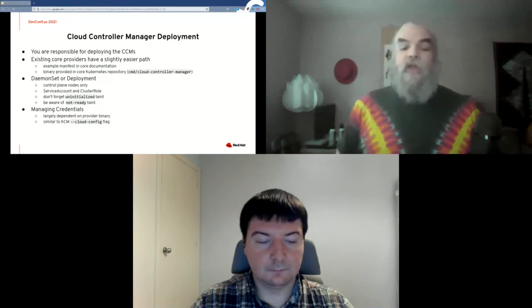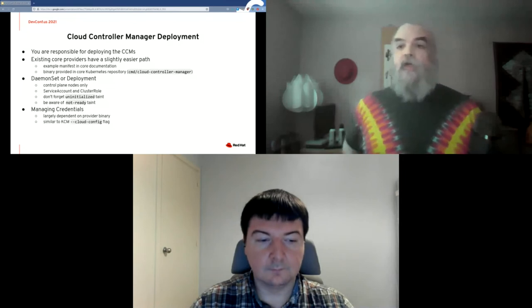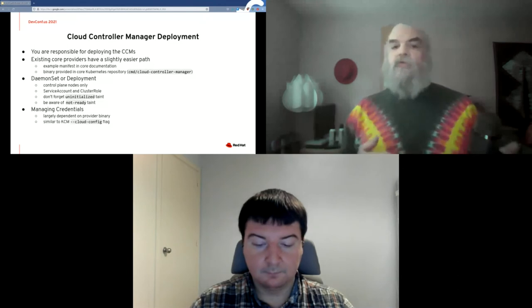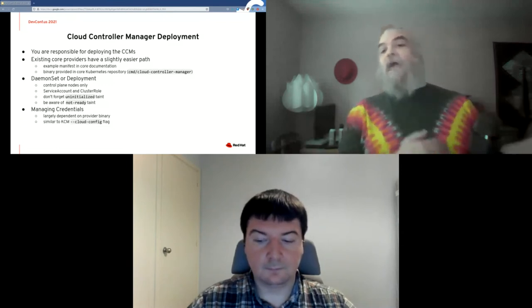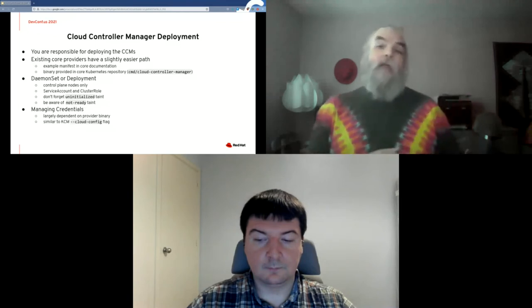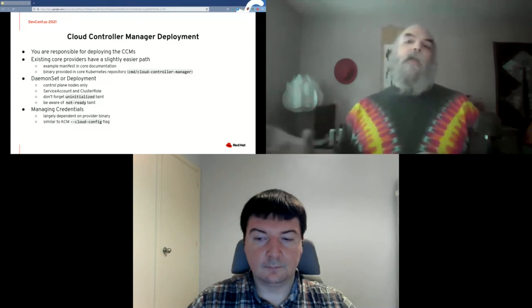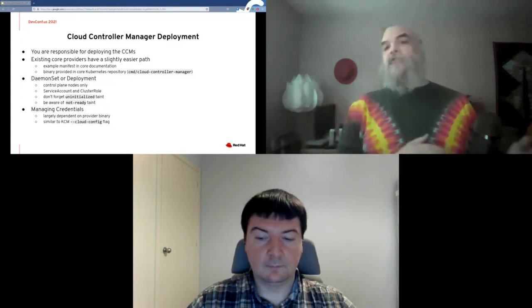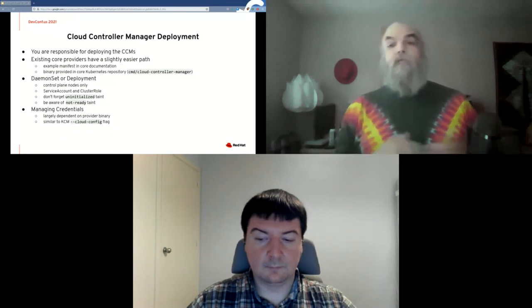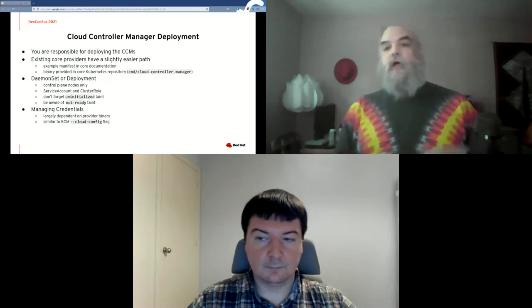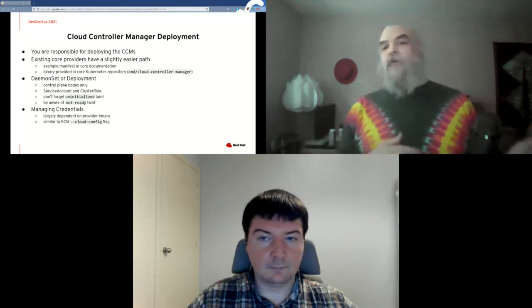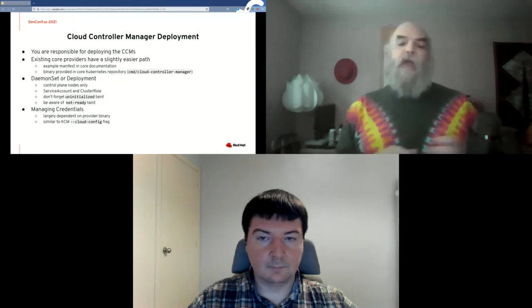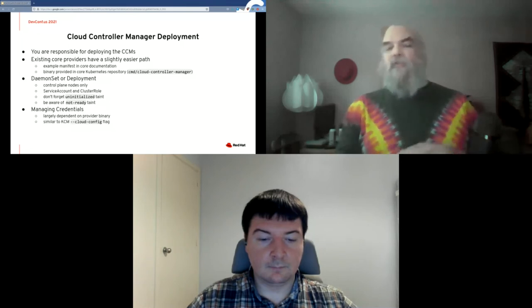You will need a service account and cluster roles for your CCMs — they'll need access to nodes, services, routes, and other resources depending on the controllers they run. Don't forget about the uninitialized taint, because if you have things expected to run before the node is ready, that taint will cause issues. The not-ready taint will also most likely need to be tolerated by your CCMs so they can run while networking is coming up. For credential management, you'll use the `--cloud-config` flag pointing to a local directory in the container, usually a mounted secret or config map, with contents that depend on your specific provider.